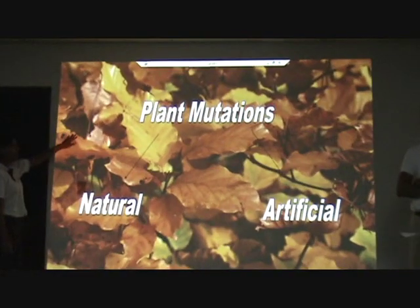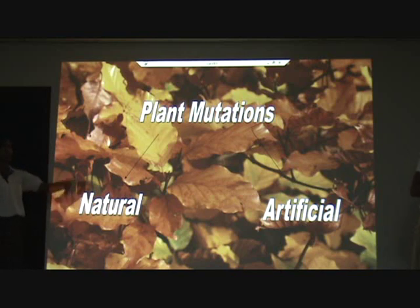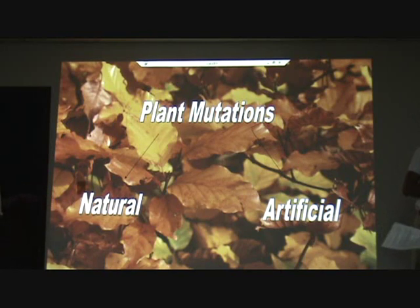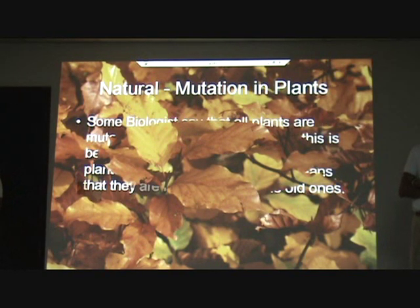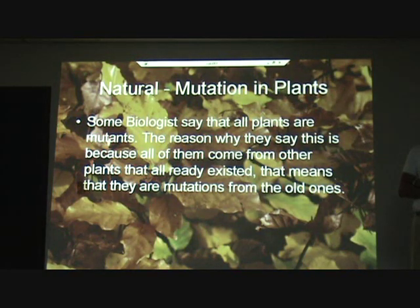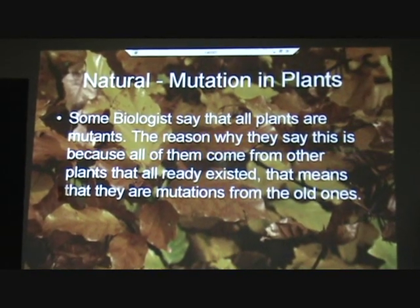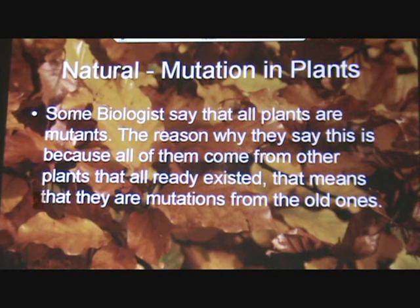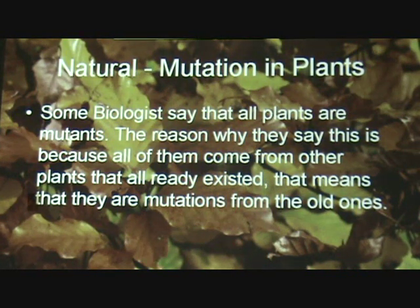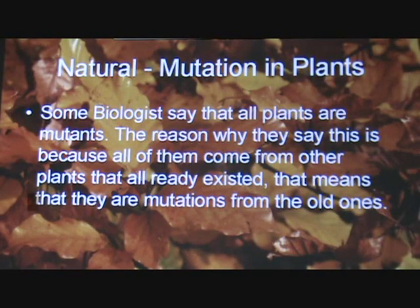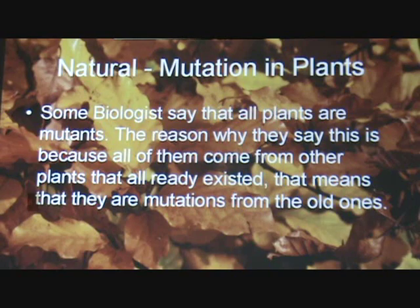We found plant mutations that were first divided by two groups: natural and artificial. First, we want to explain the natural mutations. We found that some biologists thought that all plants are a mutation, because they say that one plant comes from one that already existed, so that meant that a plant was a mutation from the old plant.